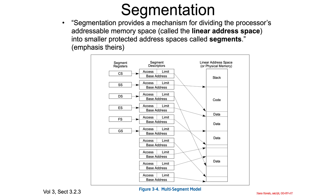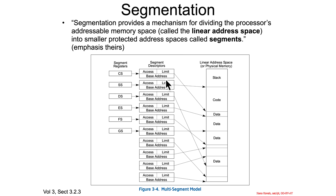We're on the hunt for information that can teach us about how the Intel privilege rings work, and we said we have to do a bit of a detour through segmentation. So what is segmentation? Segmentation provides a mechanism for dividing the processor's addressable memory space, called the linear address space, into smaller protected address spaces called segments. So we're going to be talking about linear address spaces and segments.